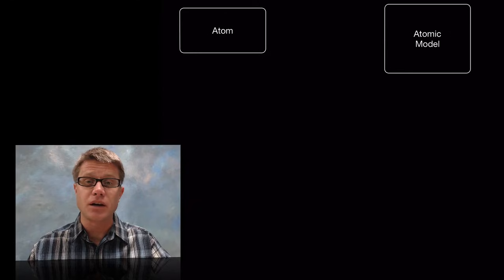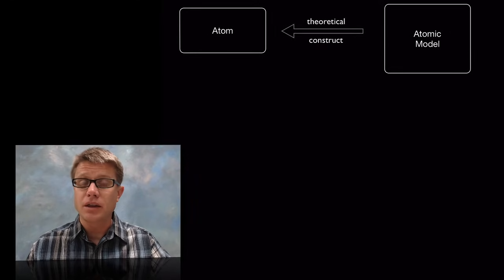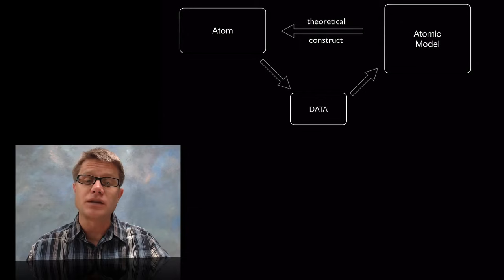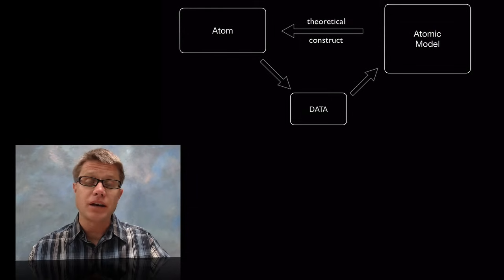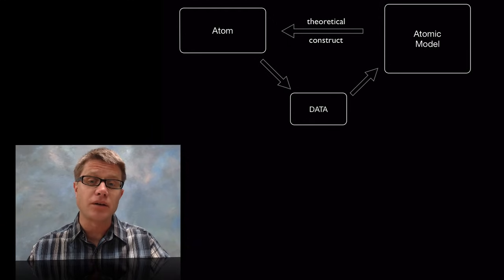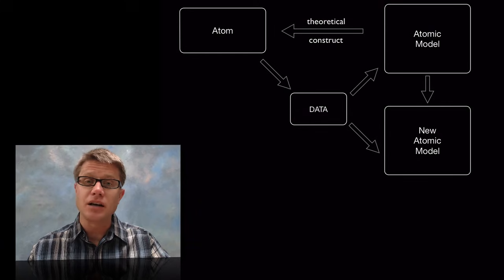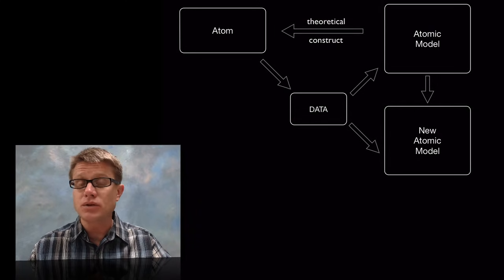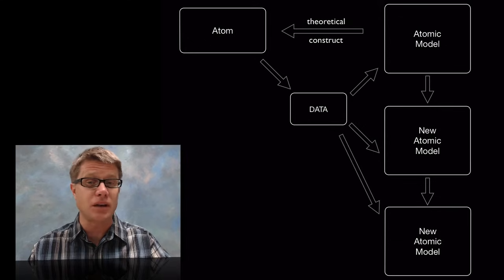And so we've got an atom which is phenomena. And then we have an atomic model which is just a construct of what we think that looks like. And what we're able to do is gather data from the phenomena. And as long as that fits our model then everything is good. But once we start to conflict with that model then we have to develop a new atomic model. And we play that against the data. As long as everything fits we use that model. But if it doesn't then we develop a new atomic model. And that's really how science works.